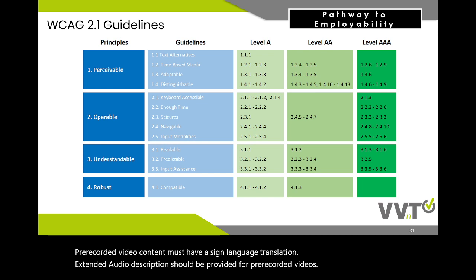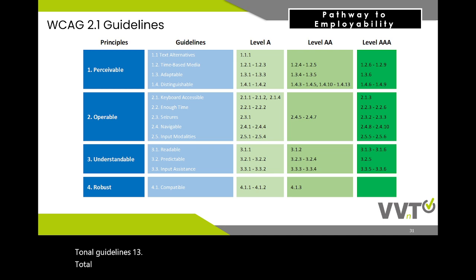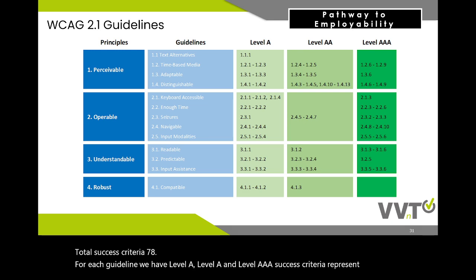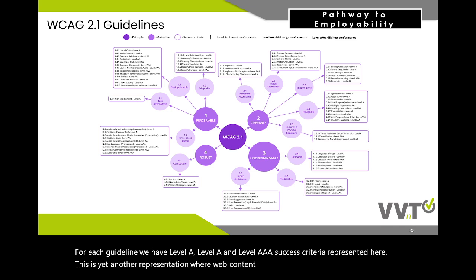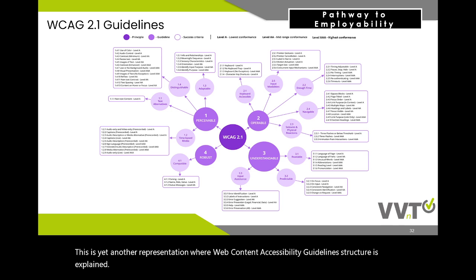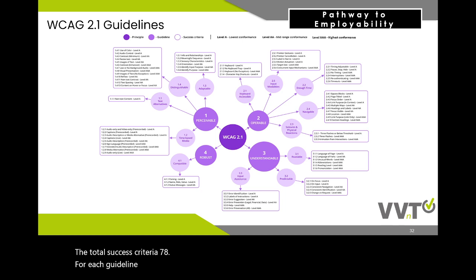To summarize the WCAG structure: 4 total principles, 13 total guidelines, and 78 total success criteria. For each guideline, we have Level A, Level AA, and Level AAA success criteria. The Web Content Accessibility Guidelines structure shows that for each guideline, the three levels of success criteria are represented hierarchically.